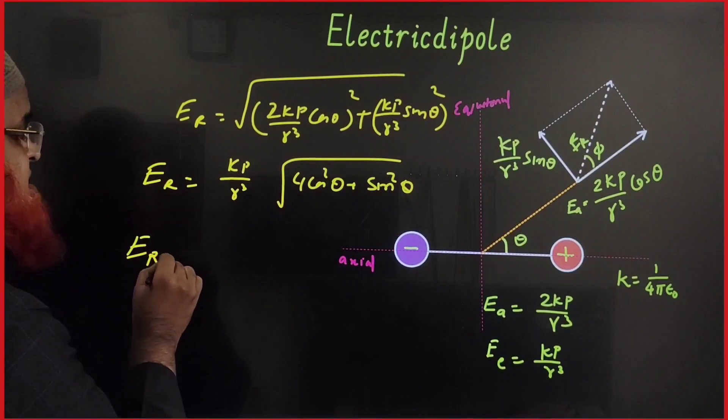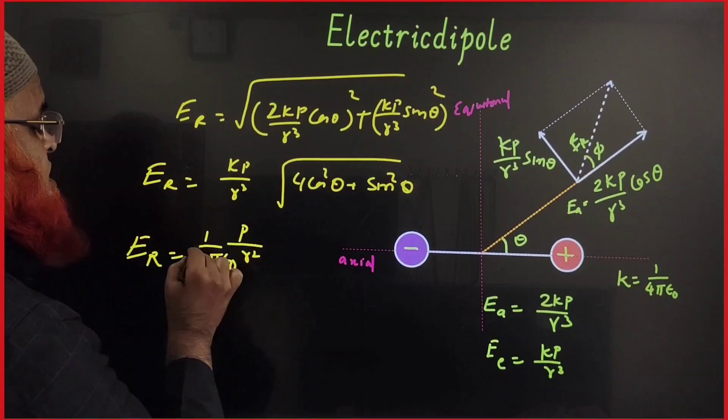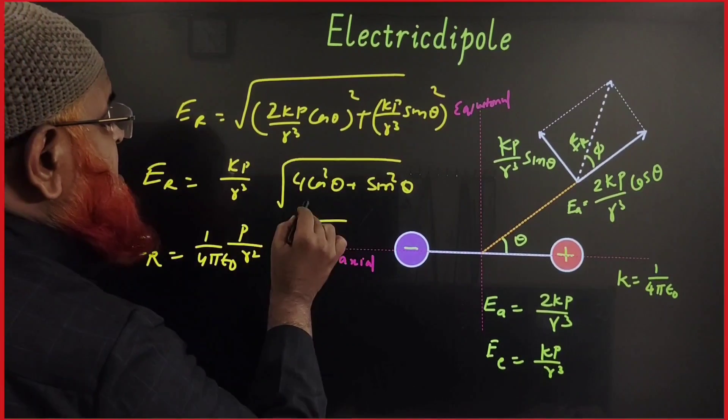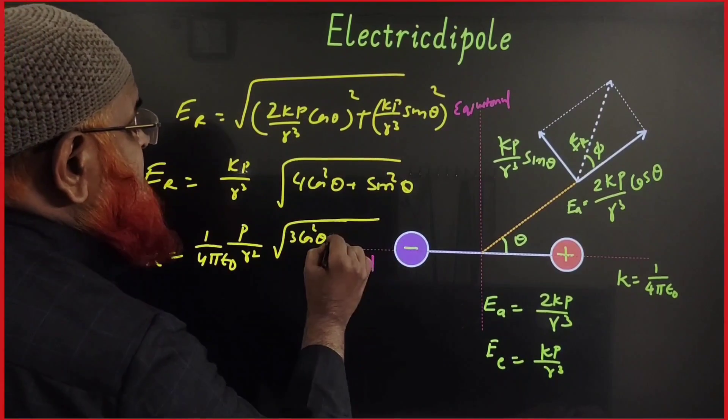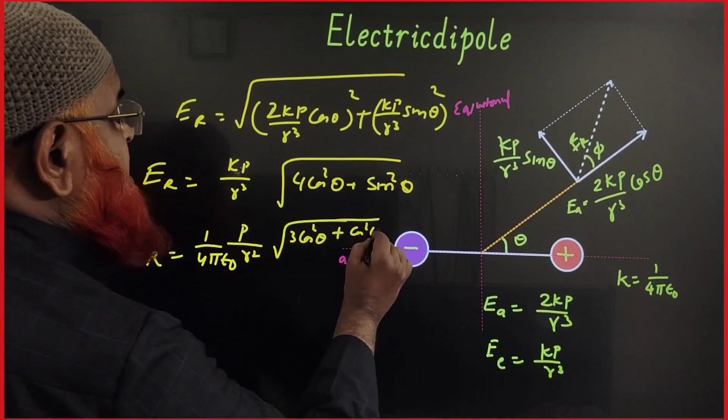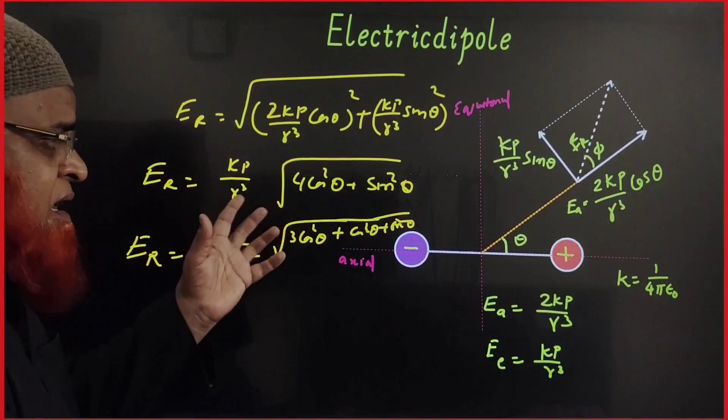I will write the resultant k I will consider as 1 by 4 pi epsilon naught p by r cube here and this is going to be I will take the 3 cos square theta like that only and 1 cos square theta I will club with sin square theta. So cos square theta plus sin square theta here. So cos square theta plus sin square theta is going to be 1. Okay.